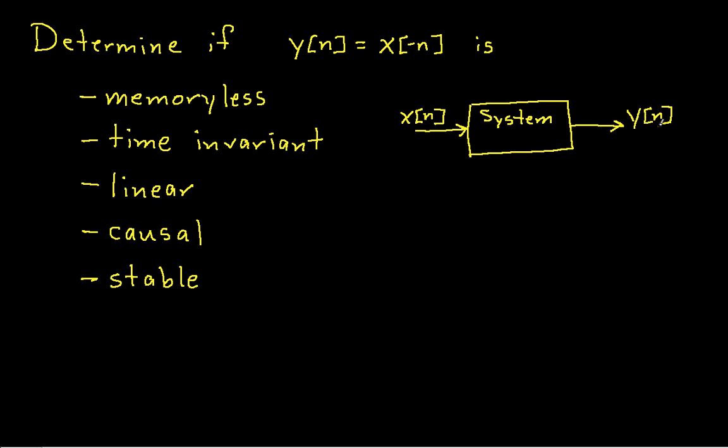Now clearly, this is sort of a weird system. Most systems in real life can't look into the future to determine what something is going to be, especially if you think of n as a time variable. Sometimes you'll deal with systems that work in a spatial domain, so n is basically an index into an image or something like that. In that case, then this makes perfectly good sense. You look at elements to the left of n to determine what elements to the right of n are going to be, and so on.